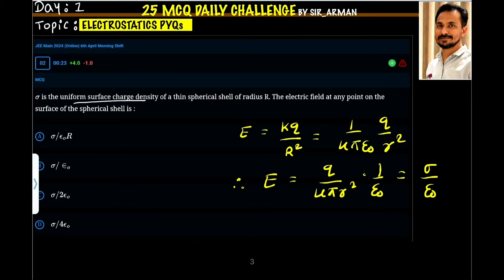Sigma is the uniform surface charge density of a thin spherical shell of radius R. So let us assume we have a thin spherical shell whose radius is R. Now, the electric field at any point on the surface...